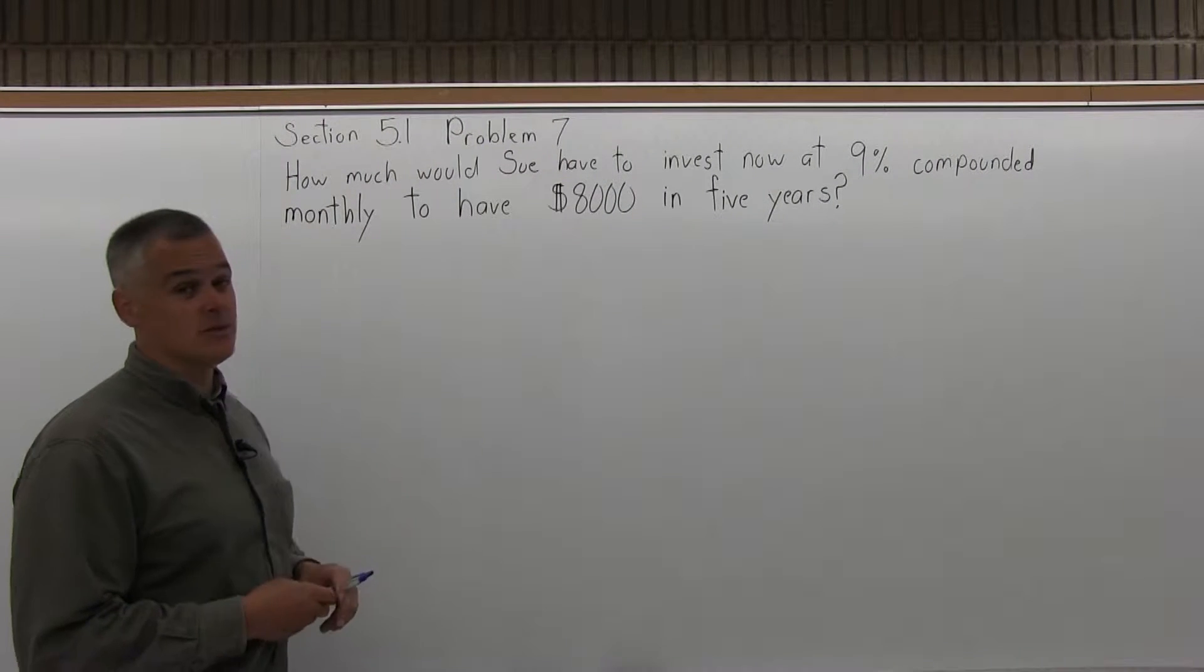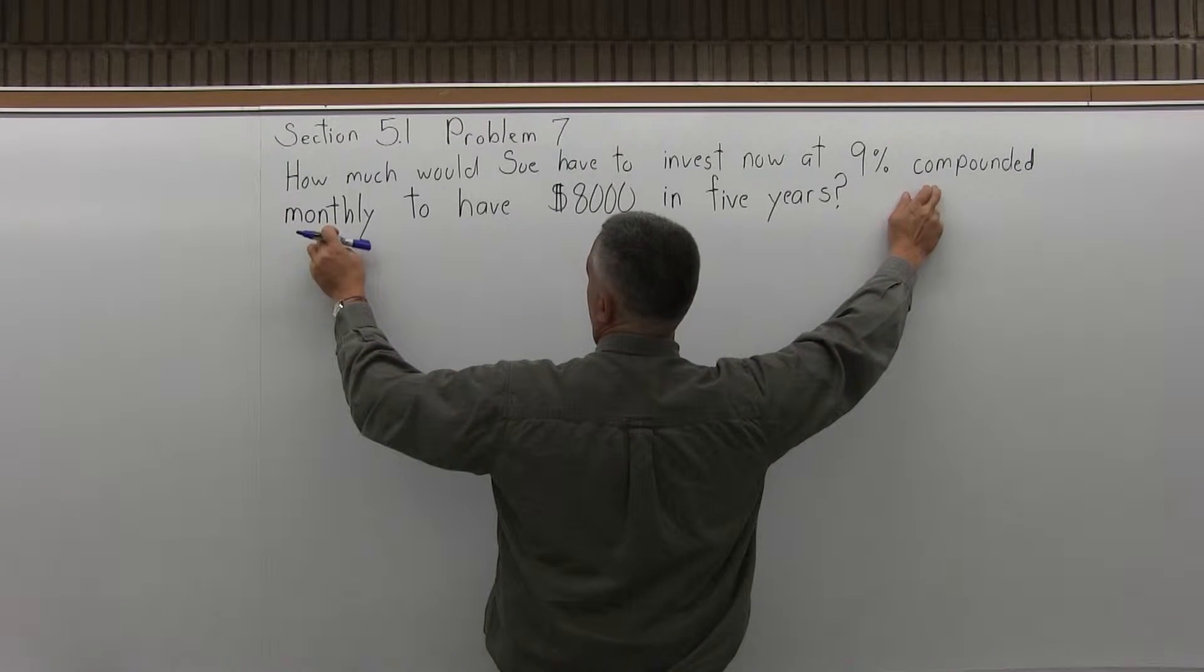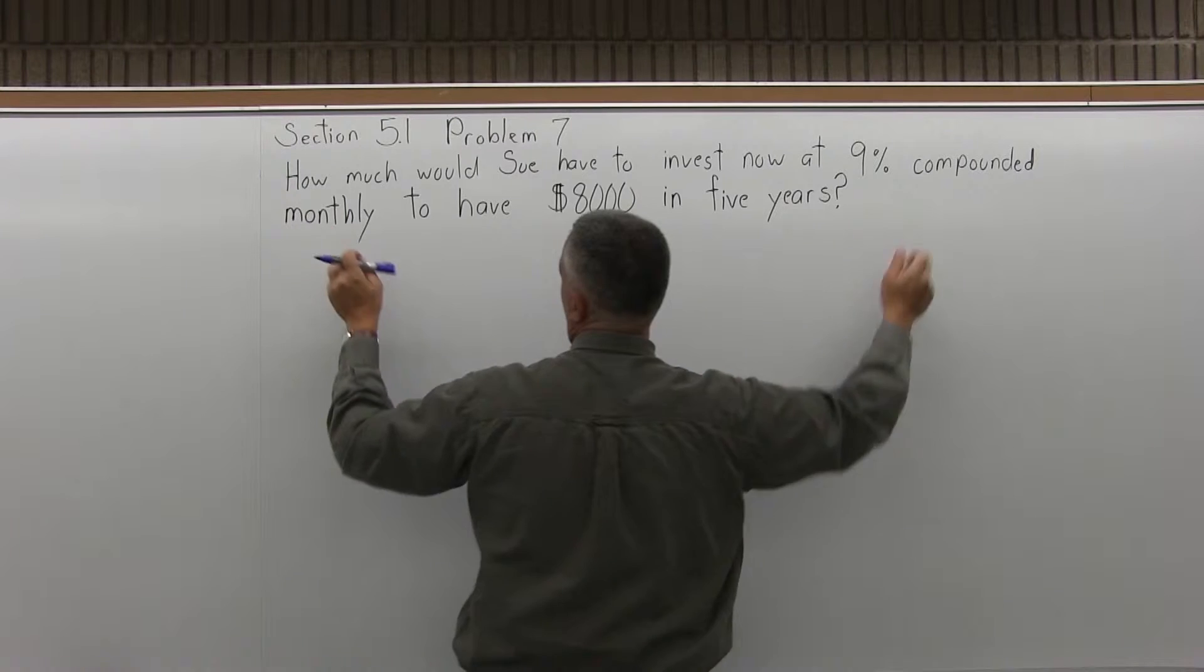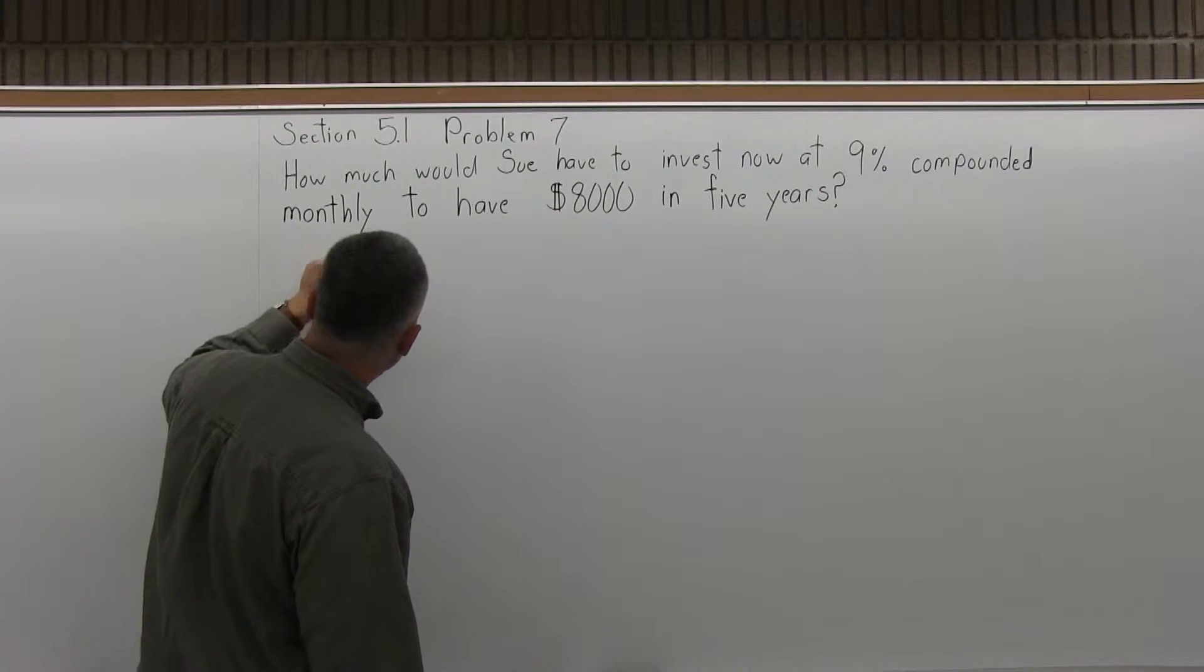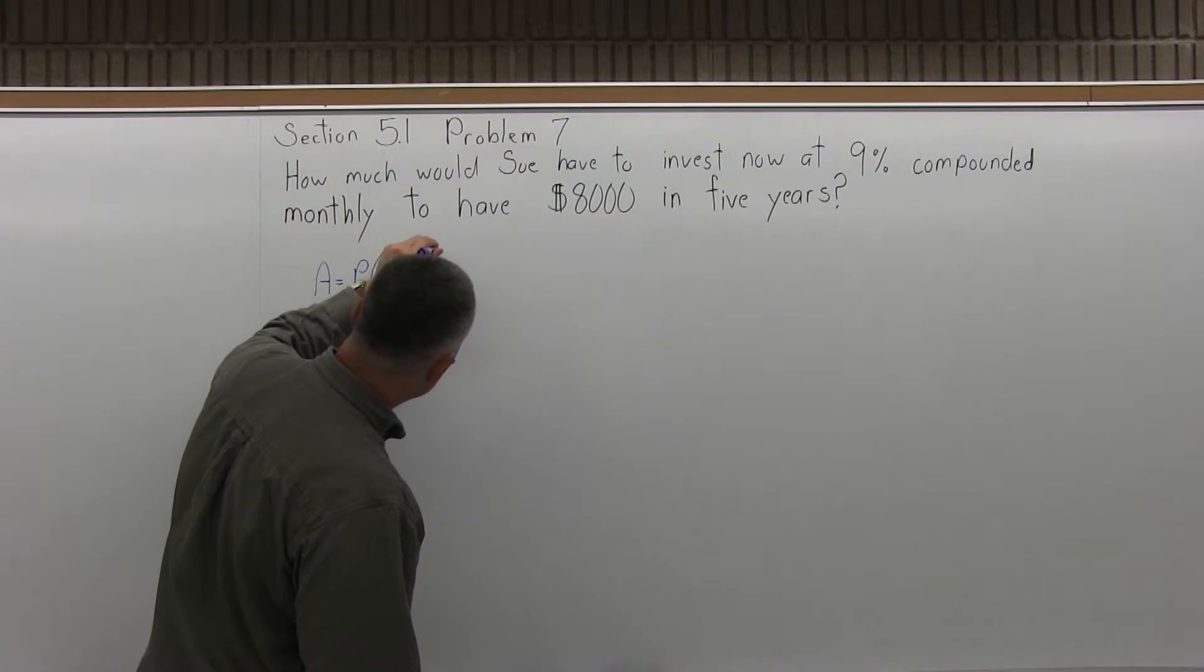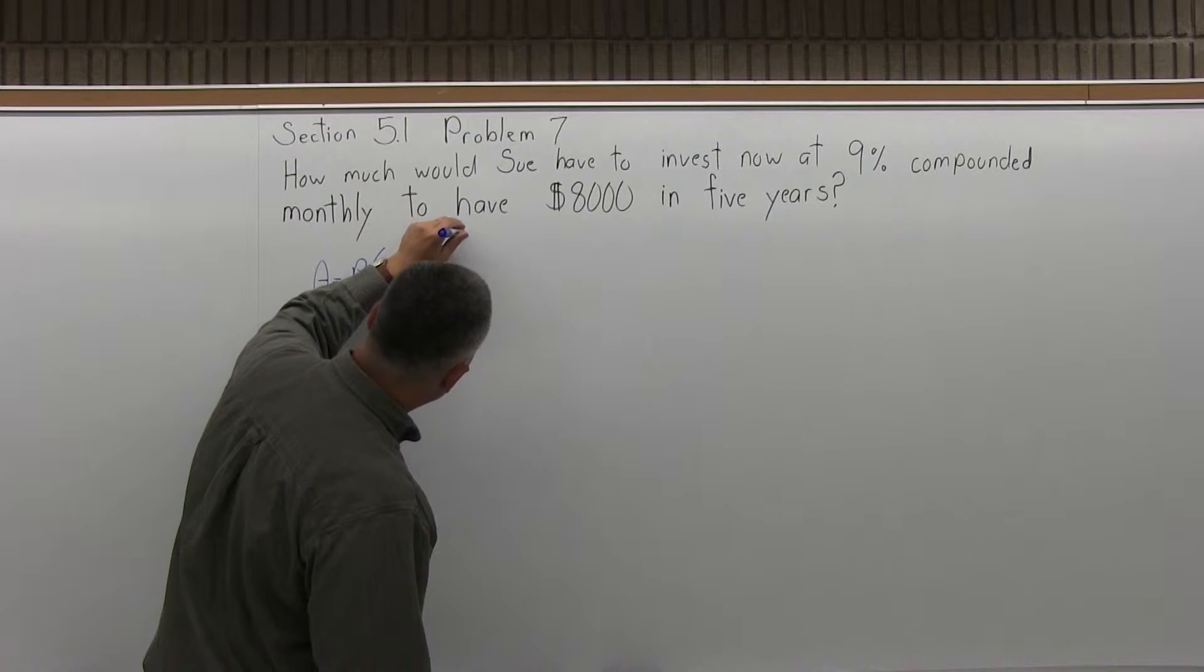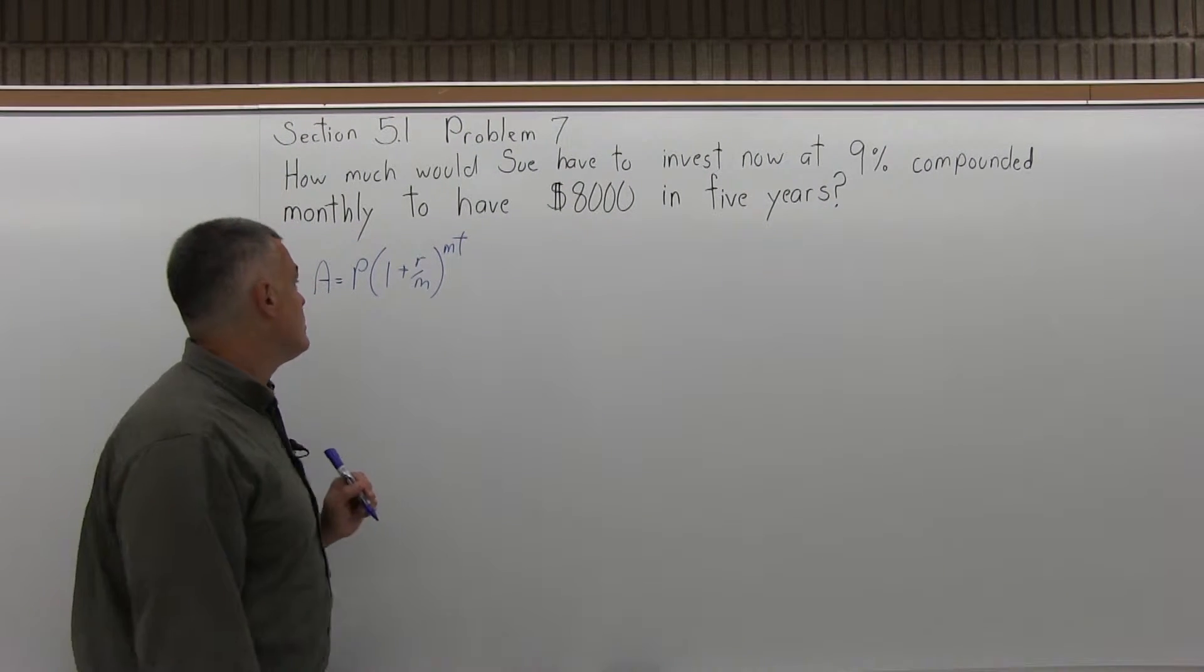This one is compounded, so I'm going to use the compound interest formula. I know it's compounded because they talk about monthly compounding. The compound interest formula is A equals P times, in parentheses, 1 plus R over M, close parentheses, to the M times T power.